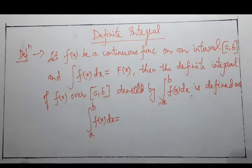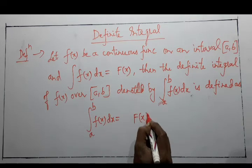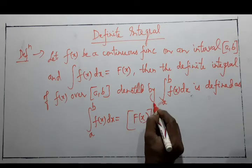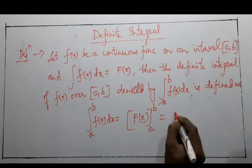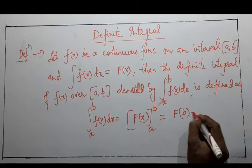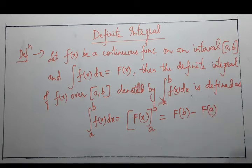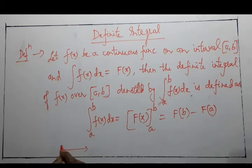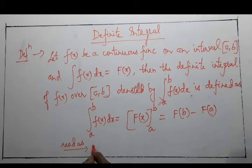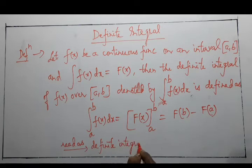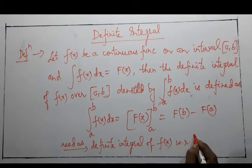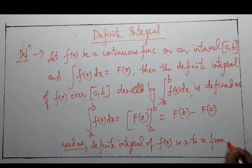To evaluate a definite integral, we take the value of the indefinite integral and apply the limits a to b. First, substitute b and then subtract the value at a. This is read as: the definite integral of f(x) with respect to x from a to b — from lower limit to upper limit.